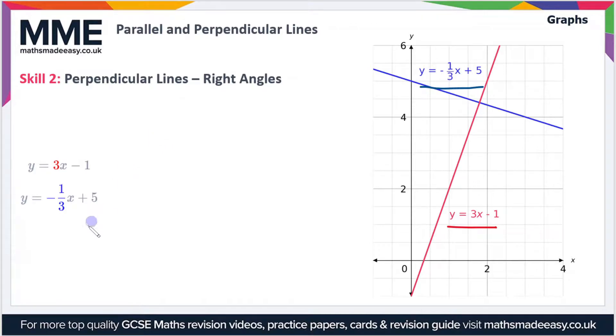If we multiply them together, well, we have the gradient of 3 and we have a gradient of negative a third. So 3 times minus a third, that equals minus three over three. If you cancel that down, you get minus one. So that's the case for any perpendicular lines – if you multiply the gradients together, you're always going to get minus one.